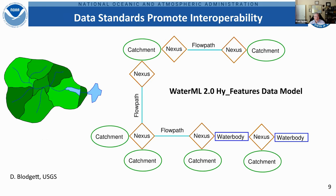The WaterML HY_Features data model is a fairly simple standard. It divides the landscape into catchments; things that move water in a 1D context are flow paths; things that store or move water in a 2D or 3D context are called water bodies. You can take a real system and break it down into these components. The connectors between catchments, flow paths, and water bodies are called nexuses, or nexi — they represent boundary conditions between different objects, which can be zero, one, two, three, or four dimensional. This flexibility allows coupling of dissimilar models using adapters, mediators, and code exchanges across model boundaries.